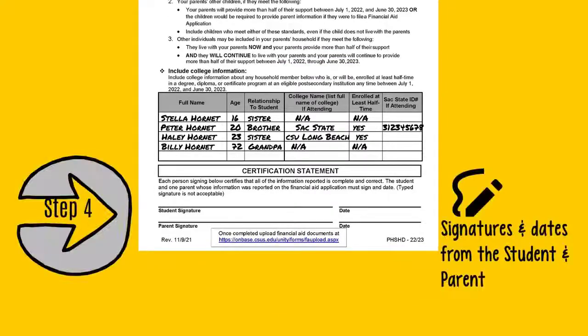Step 4: Provide dated signatures from both the student and parent at the bottom of the form. Only one parent signature is needed. It is important that these are handwritten signatures — typed signatures will not be accepted.